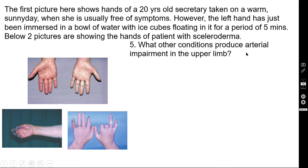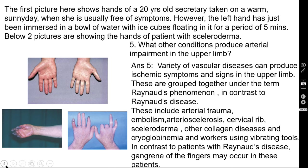Question five: what other conditions produce arterial impairment in the upper limb? A variety of vascular diseases can produce ischemic symptoms and signs in the upper limb. These are grouped together under the term Raynaud's phenomenon, in contrast to Raynaud's disease. These include arterial trauma, embolism, arteriosclerosis, cervical rib, scleroderma, other collagen diseases, cryoglobulinemia, and workers using vibrating tools. In contrast to patients with Raynaud's disease, gangrene of the fingers may occur in these patients.